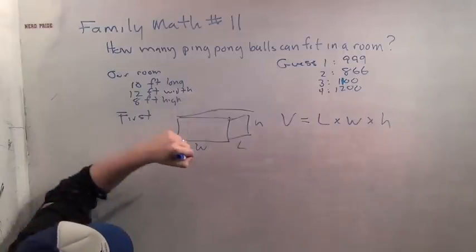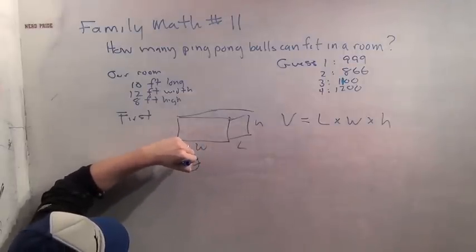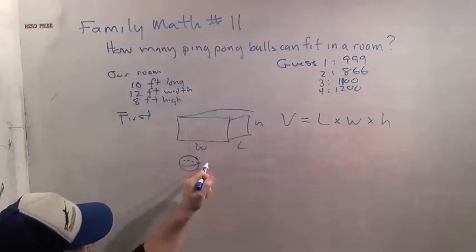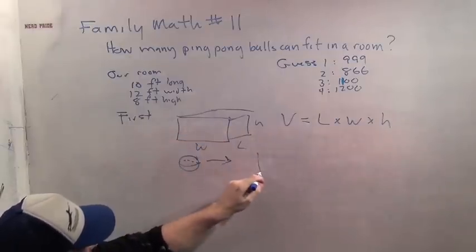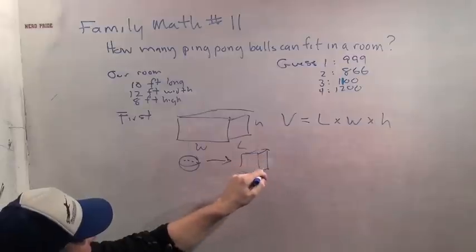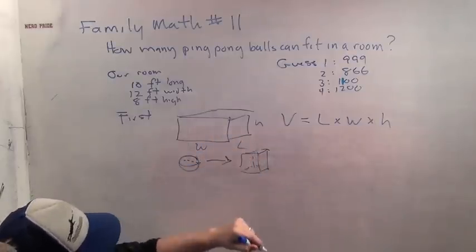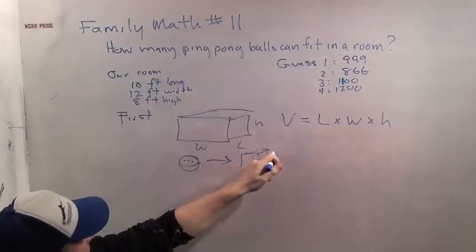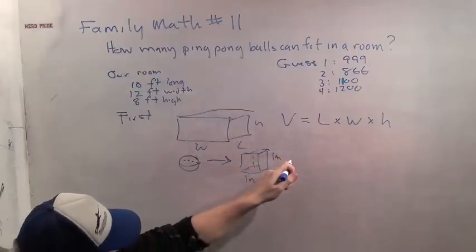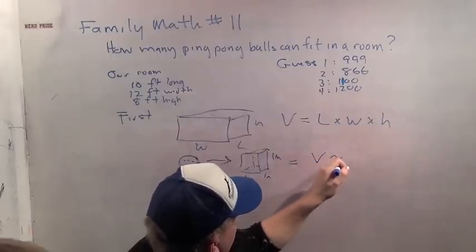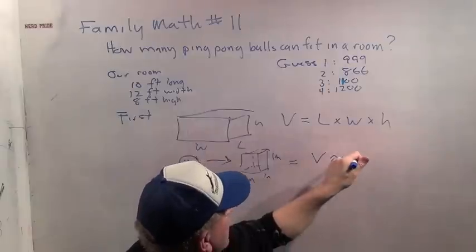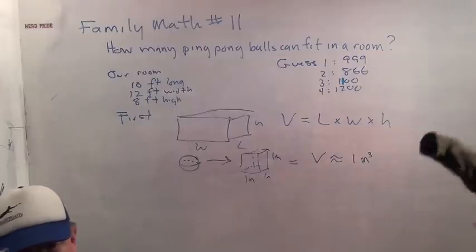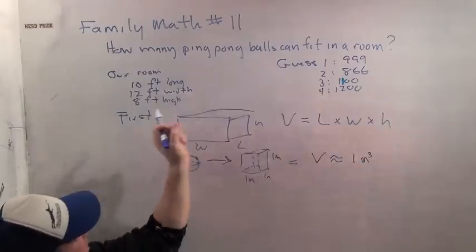Now, a ping pong ball is a sphere, but we don't really know how to calculate the area of a sphere or the volume of a sphere, so we're going to pretend that a ping pong ball is not nearly as fun, but it's just a cube. Ping pong cube. Okay? Now, this is about one inch, right? A ping pong ball is about one inch wide, one inch long, and one inch tall. So by our formula, the volume of a ping pong ball is approximately, it's not exactly, it's just approximately one inch cubed. One inch cubed. Okay?